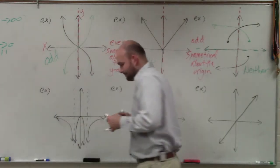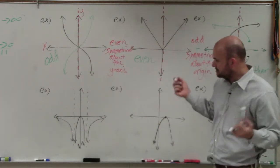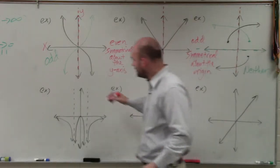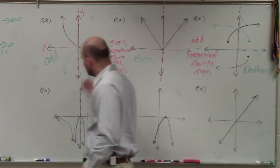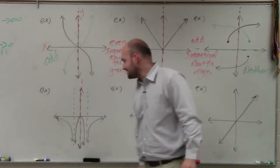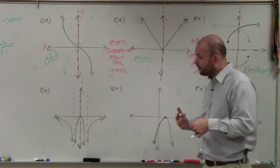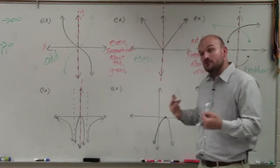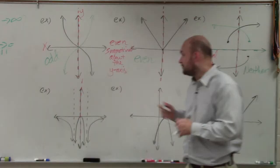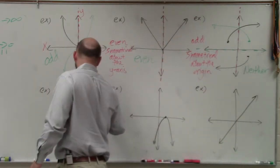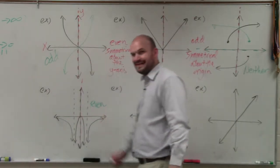Over here, this one looks kind of complex — you have asymptotes and a lot going on. However, if you look at what's happening to the left of the y-axis as well as to the right of the y-axis, you can see that the graph is symmetrical about the y-axis. Since it's symmetrical about the y-axis, this graph is even.